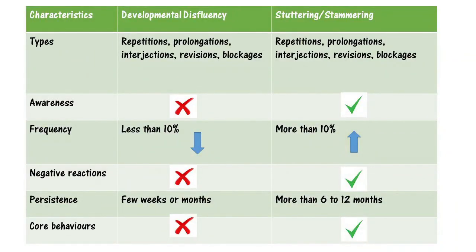But as a parent, how do you know if your child is exhibiting developmental disfluency or stuttering? Let's look at a comparison table. The types of disfluencies are the same across developmental disfluency and stuttering — they exhibit similar repetitions, prolongations, interjections, revisions, and blockages. In developmental disfluencies, children are not aware of their speech, whereas in stuttering, they are very much aware of how they are talking.